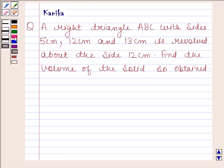Let us now begin with the solution. Suppose this is the right triangle ABC in which AB is equal to 12 cm, BC is equal to 5 cm and AC is equal to 13 cm.